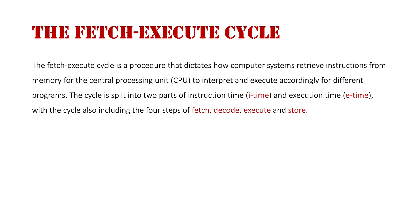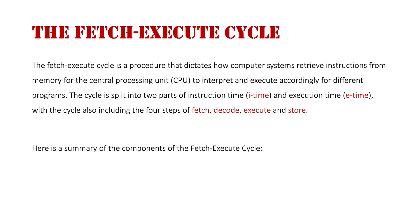The cycle is split into two parts of instruction time known as I-time and execution time E-time, with the cycle also including the four steps of fetch, decode, execute and store. So firstly we'll take a look at what I-time and E-time are. Here's a summary of those two components.